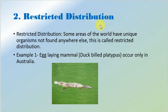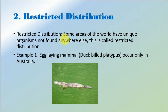Now we will look at restricted distribution. As the name suggests, restricted means the limitation of a particular species to a particular continent or a particular limited geographical area. The occurrence of the species is restricted only to one geographical area, and the process is known as restricted distribution. Some areas of the world have unique organisms not found anywhere else — it is called restricted distribution. One example is the egg-laying mammal, also known as the duck-billed platypus, which is only seen in Australia.